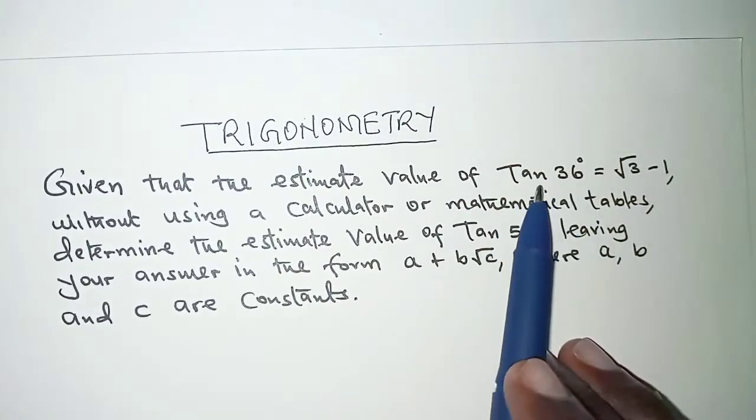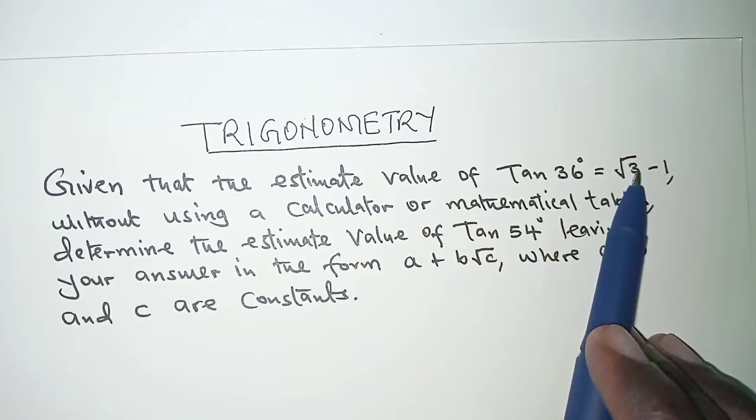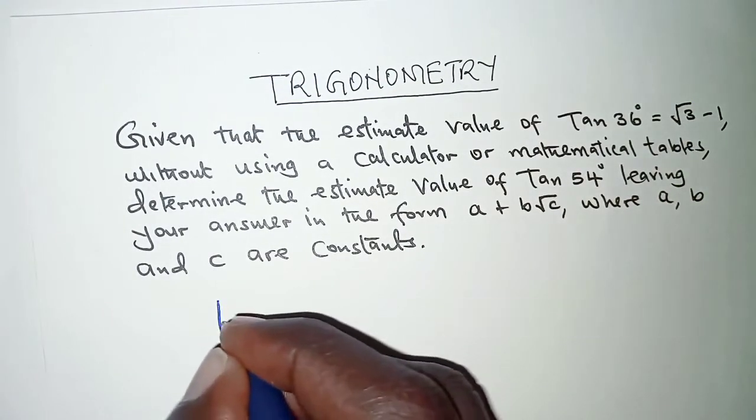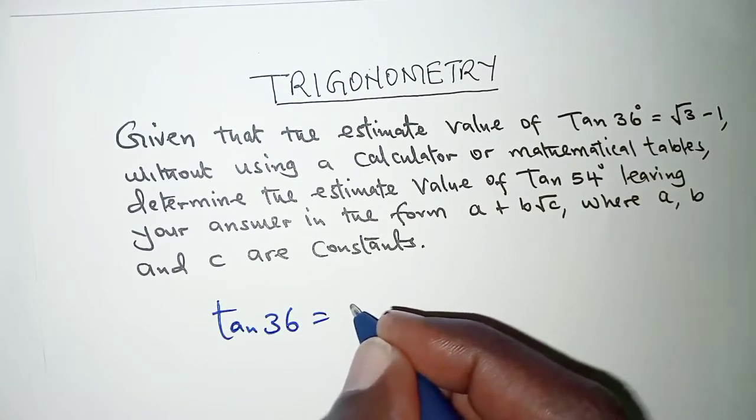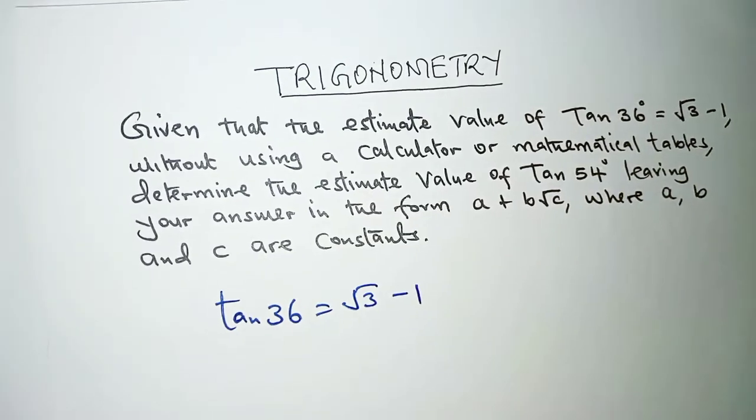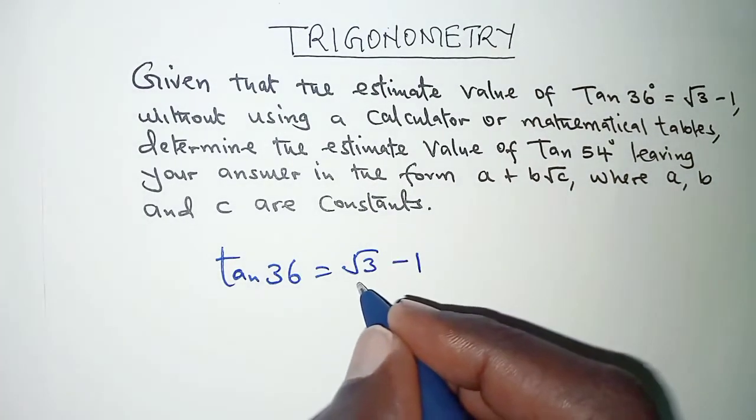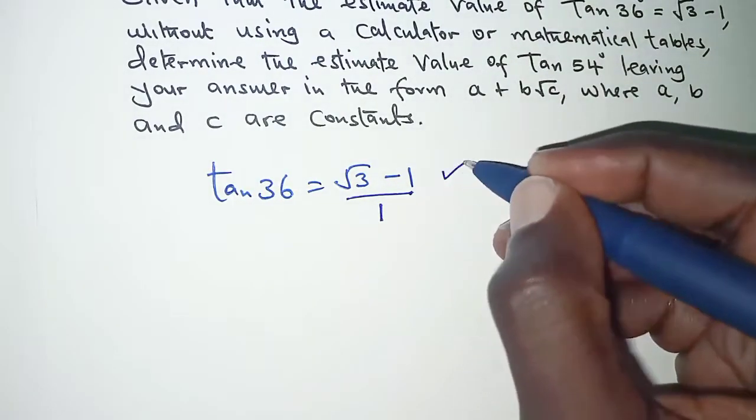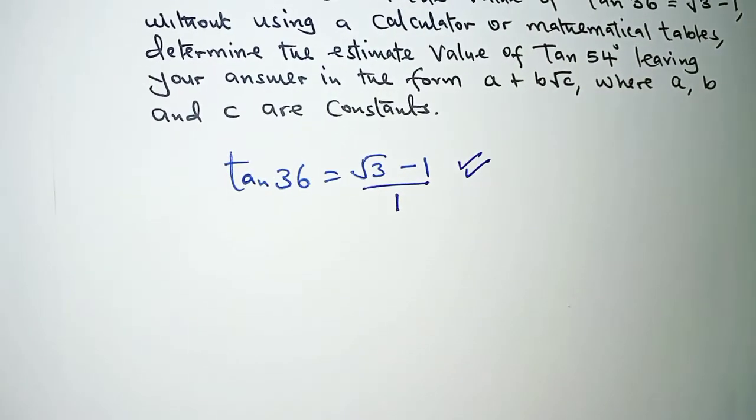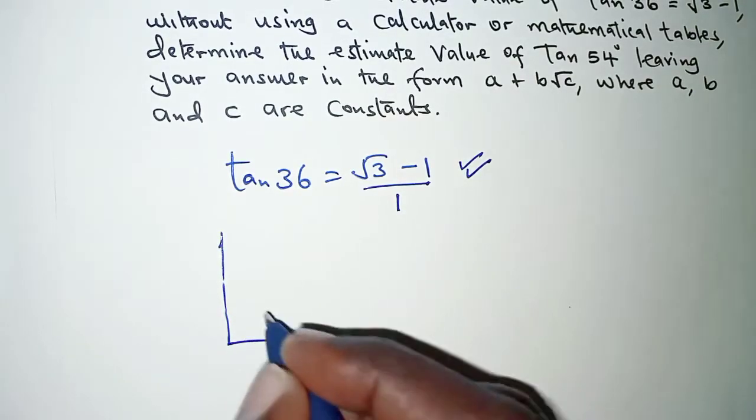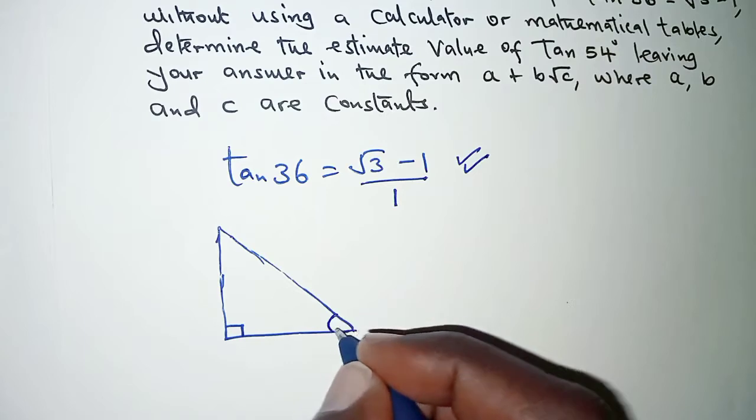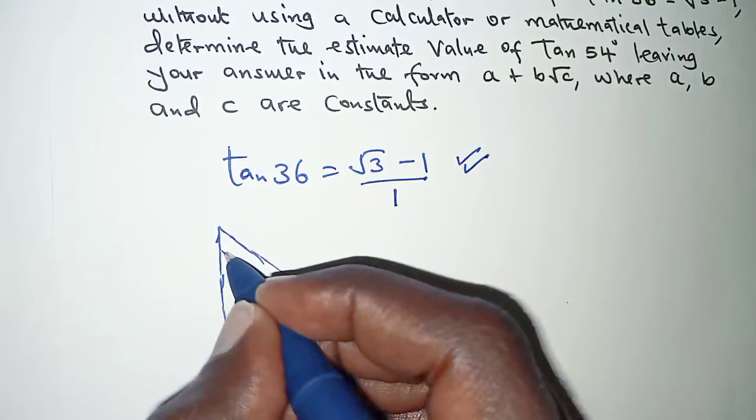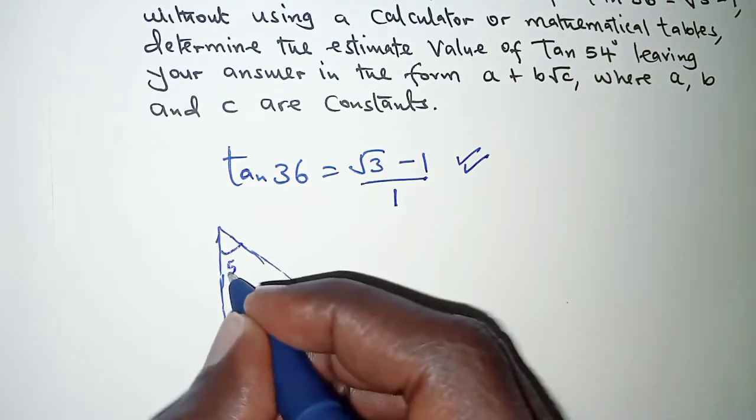The first part you're told that tangent of 36 is root 3 minus 1. So if we have tan 36 as root 3 minus 1, we can have this as a fraction by simply having all of that over 1. And then the next step is to interpret this ratio from a right angle triangle. So given the right angle triangle as this, if this particular point we have 36, then definitely this other side will be 54, so that sum of angles in this triangle is 180.